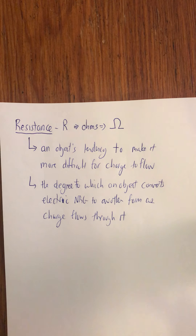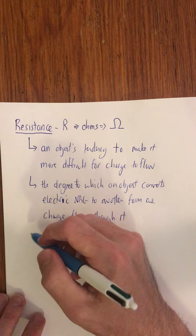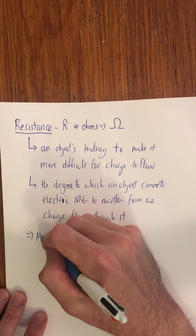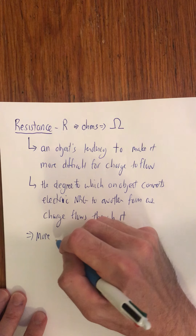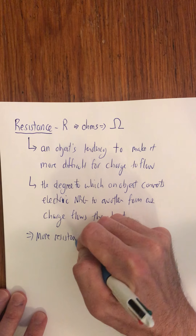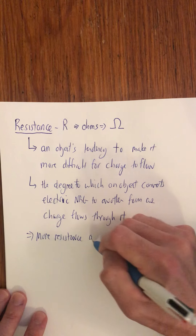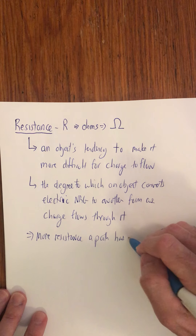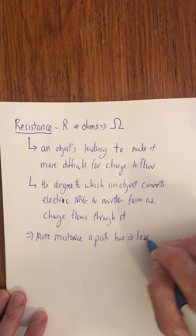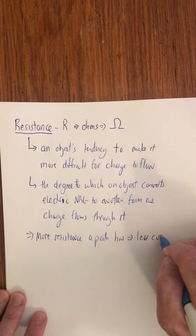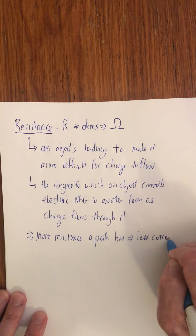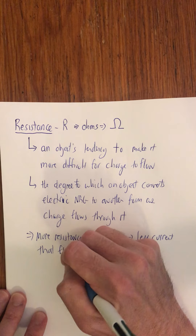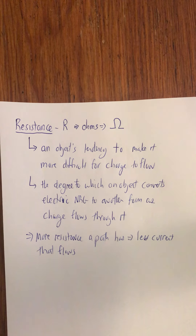The more resistance a path has, the less current that flows. That's where we got that from.